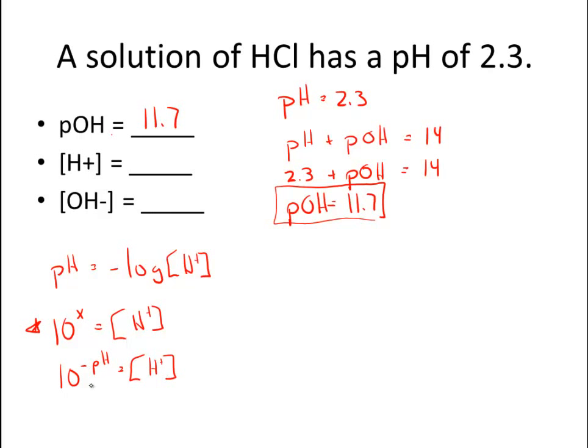And what you're going to enter into your calculator is 10 to the negative pH equals my hydrogen ion concentration. Now once again, this button right here is the button directly above your log button traditionally. And when I substitute in 10 to the negative 2.3, I find out that the H plus ion concentration is going to be equal to 5.0 times 10 to the negative 3 molar or moles per liter. So this would be my hydrogen ion concentration, 5 times 10 to the negative 3 molar.